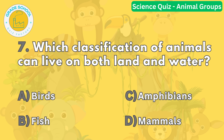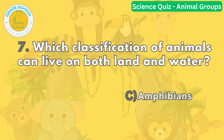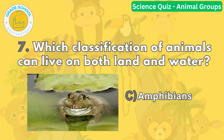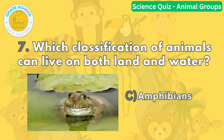The correct answer is letter C. Amphibians, like frogs and newts, can live on both land and in water. They have unique adaptations that allow them to survive in both environments.